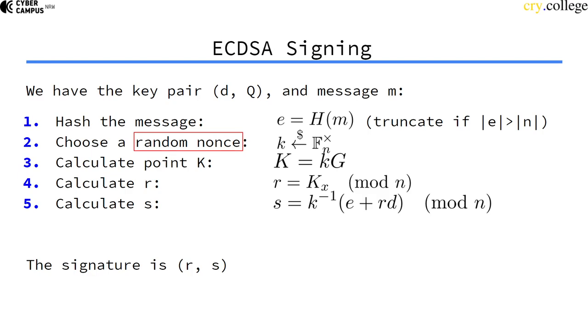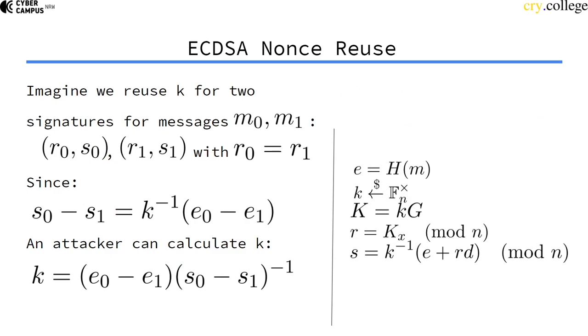So, the ECDSA signing, we have this nonce, the number used once, because we need a fresh number every time we compute a signature. Well, what could happen if we maybe reuse such a number?